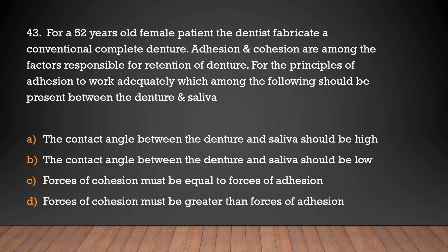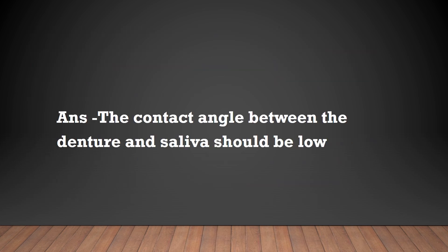For a 52-year-old female patient, the dentist fabricates a conventional complete denture. Adhesion and cohesion are among the factors responsible for retention of the denture. For the principles of adhesion to work adequately, which should be present between the denture and saliva? The contact angle should be high, the contact angle should be low, forces of cohesion must equal forces of adhesion, or forces of cohesion must be greater than forces of adhesion. The answer is: the contact angle between the denture and saliva should be low.